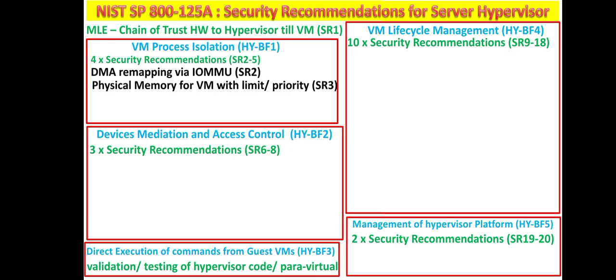The second security recommendation is that dedicated physical memory should be allocated for each VM with defined upper and lower limits, along with priority settings in case of resource contention between different VMs. Additionally, the virtual resources allocated to different VMs should not exceed the physical resources available on the physical host.